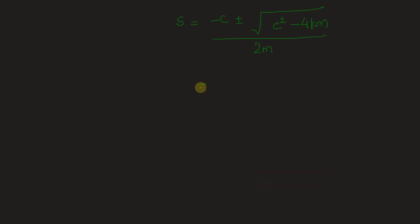Now this can also be written as -c/2m ± √[c²/4m² - 4km/4m²], when 2m goes under the root it becomes 4m². Hence we get s equal to this form.